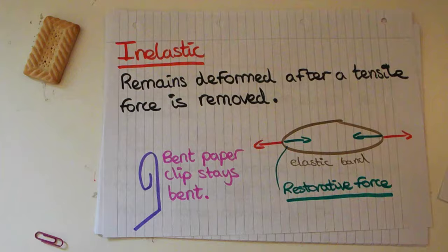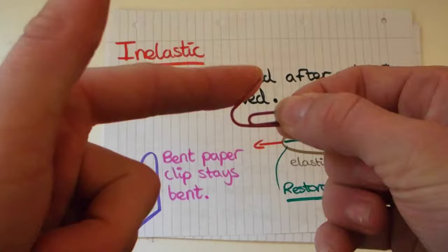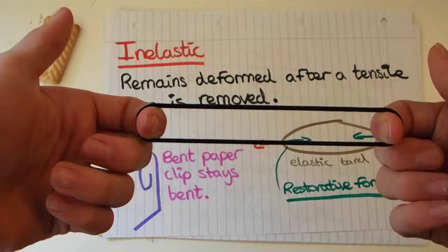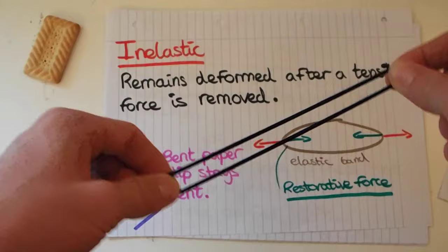Our next definition is inelastic, and this is something that remains deformed after the tensile force is removed. So this would be something like a paper clip — if I bend this you can see it's not bending back. It stays deformed because it doesn't apply something called a restorative force. This is the counter-force you get when you apply a tensile force to something elastic.